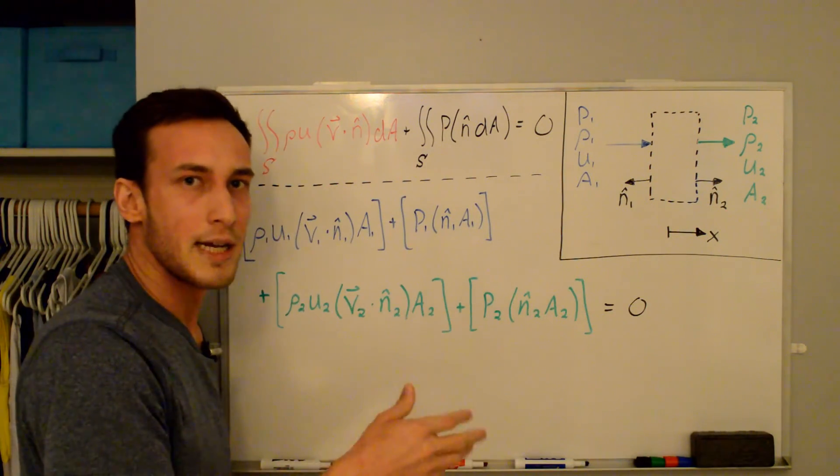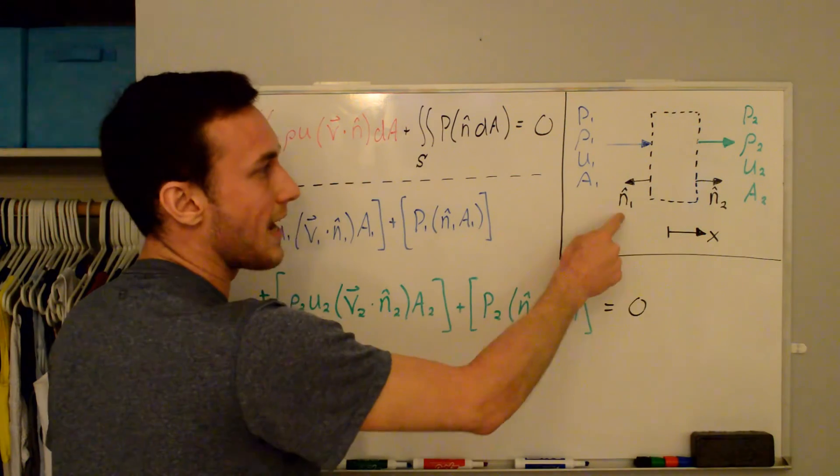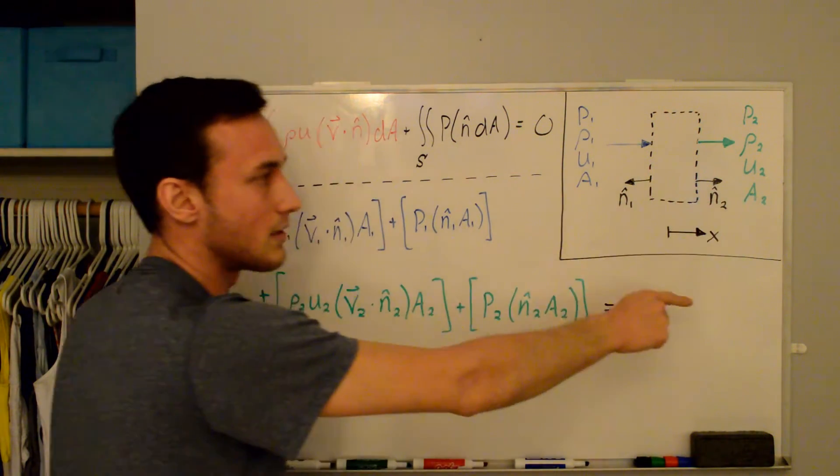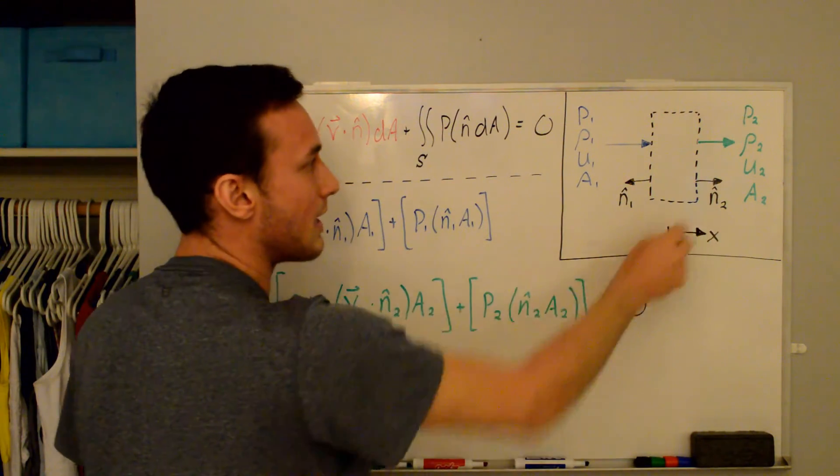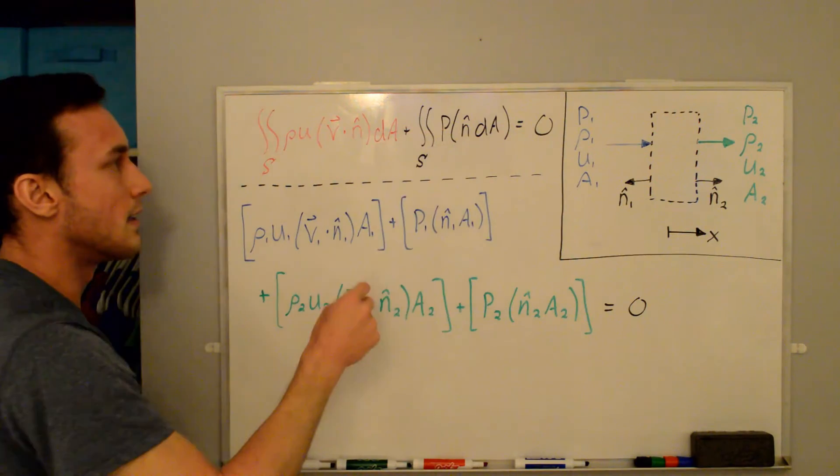And you'll see that there are these surface normals that always by definition act outward from the control volume. So on the left we have an outward acting in the negative x direction, so that's n hat 1, and on the right we have it acting in the same direction as the positive x direction, that's n hat 2. And these will come into play when we're taking our dot products up here.